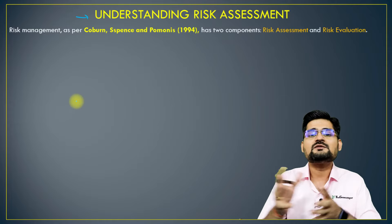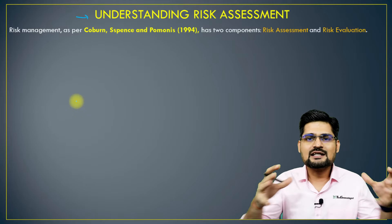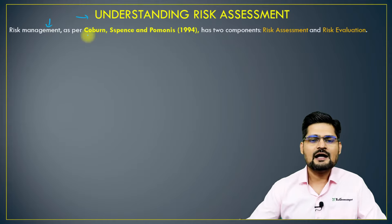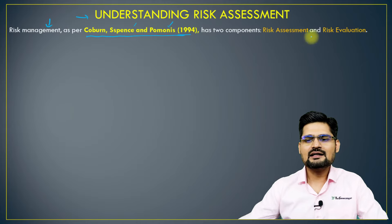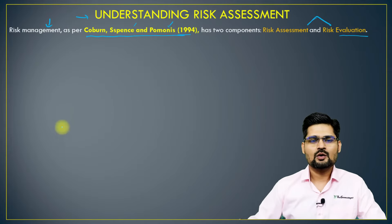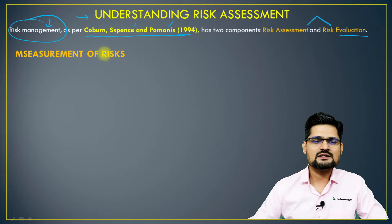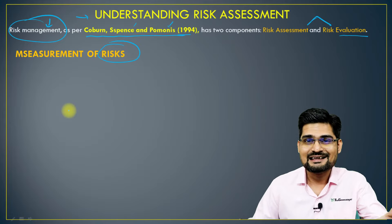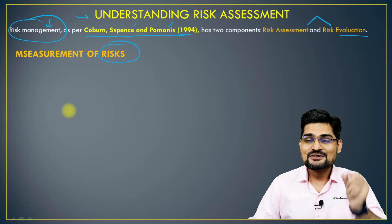There are numerous methodologies — some are quantitative in nature, some are qualitative, and some are overlapping. As per scientists Coburn, Spence and Pumones (1994), they categorize two words in risk management: risk assessment and risk evaluation. First, we look at measurements of risk — how do you measure risk in terms of probabilities, numbers and deaths?